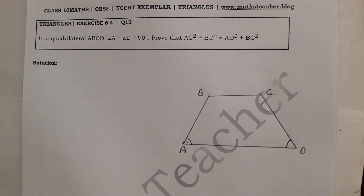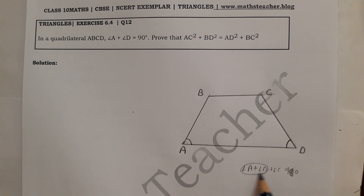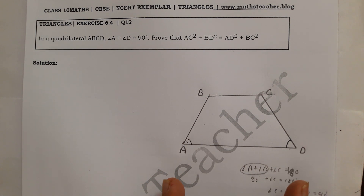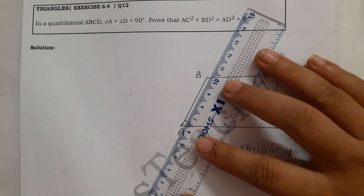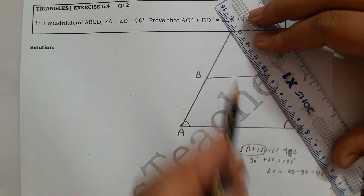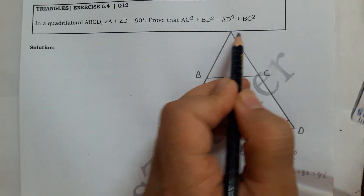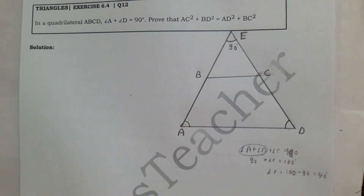Using the angle sum property in triangle AED: angle A plus angle D plus angle E equals 180 degrees. Since angle A plus angle D equals 90 degrees, we get angle E equals 180 minus 90, which is 90 degrees. So triangle AED is a right angle triangle at E. This means we can extend the sides and form right angle triangles AEC and BED.